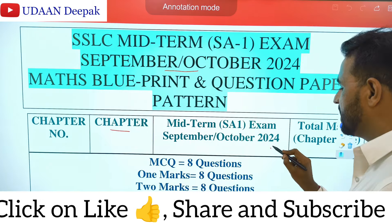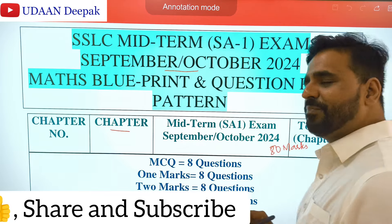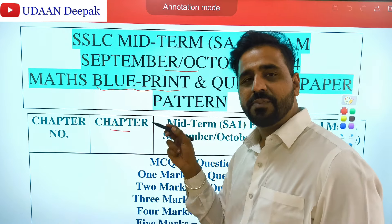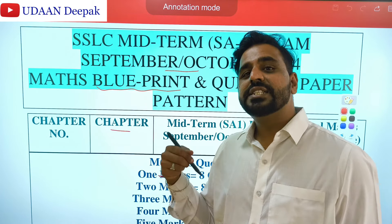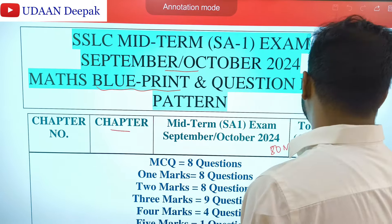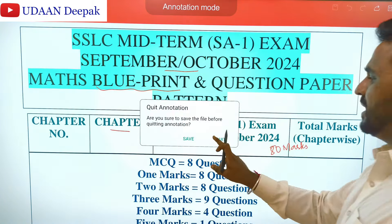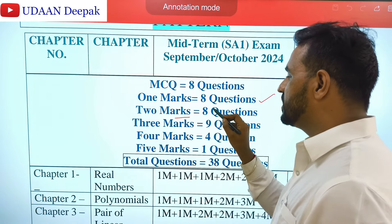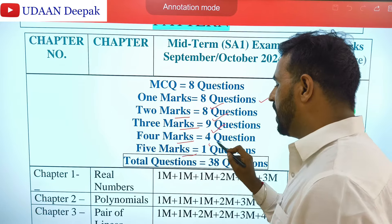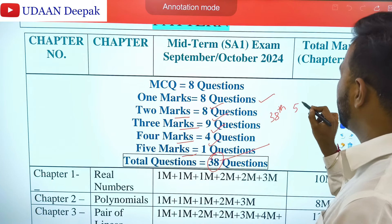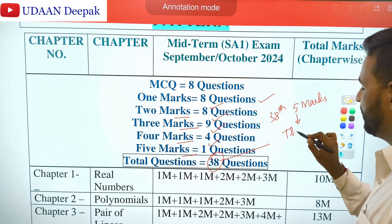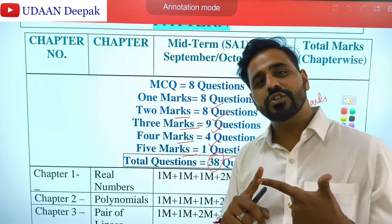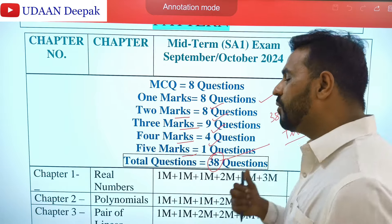In the SA1 question paper, the total marks is 80. All 7 chapters presented in Part 1 are most important. According to the blueprint provided by KSEAB, I will be discussing chapter-wise mark allotment and number of questions. Total MCQs expected from all chapters is 8. Similarly, 1-mark questions: 8, 2-mark questions: 8, 3-mark questions: 9, 4-mark: 4 questions, and 5-mark: 1 question. Total 38 questions. The 5-mark question will most likely be a theorem — either Thales' theorem or the AAA (Angle-Angle) criteria theorem. You should know both of these by heart.